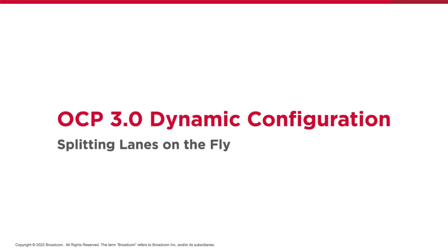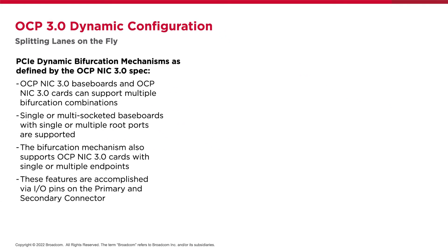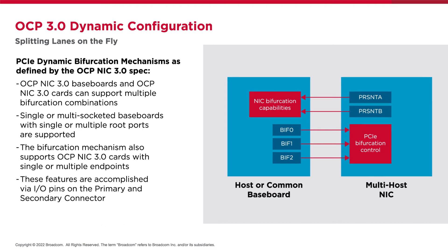The OCP 3.0 specification defines signaling methods for dynamically configuring a NIC in numerous ways to support single-host, multi-host, or multi-root applications. This allows a single NIC SKU to function in any of these personalities. The host baseboard can indicate to the NIC the preferred bifurcation configuration. It can support single or multi-socketed baseboards with single or multiple root ports for multi-root support, as well as single or multiple endpoints for multi-port NICs. This is all done by driving OCP 3.0 spec-defined I/O pins on the NIC's edge connector, illustrated at the bottom of the graphic showing how the NIC and host baseboard communicate configuration data.